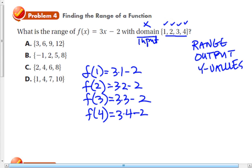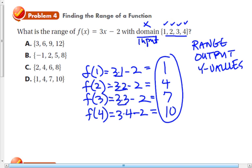And then we just evaluate those. 3 times 1 is 3 minus 2 equals 1. 3 times 2 is 6 minus 2 is 4. 3 times 3 is 9 minus 2 is 7. And 12 minus 2 is 10. So our range values, which is our output values, are 1, 4, 7, and 10. You try that.